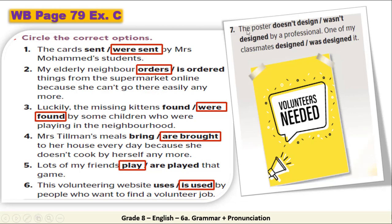The last sentence: 'The poster wasn't designed by a professional' — the poster cannot design itself, so passive: 'wasn't designed.' Then: 'One of my classmates designed it' — a classmate can do the action, so active: 'designed.'